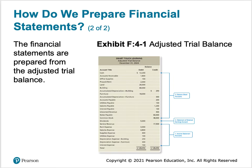In this slide we see an adjusted trial balance, which is where we left off in Chapter 3. The trial balance lists all of the accounts and their balances at the end of the financial period. The bottom part — from service revenue down to interest expense — all belongs on the income statement.